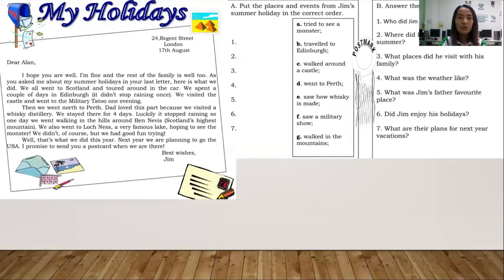24 Regent Street, London, 17th August. Dear Alan, I hope you are well. I'm fine and the rest of the family is well too. As you asked me about my summer holidays in your last letter, here is what we did.